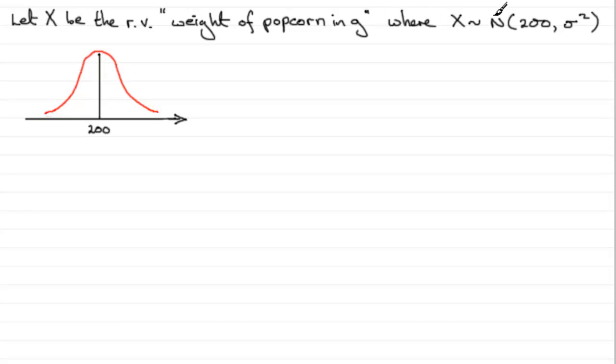Where X is distributed normally with a mean of 200 and then you've got the standard deviation sigma squared, the variance in other words. So I'd then sketch my normal distribution and define this axis along here with a capital X.